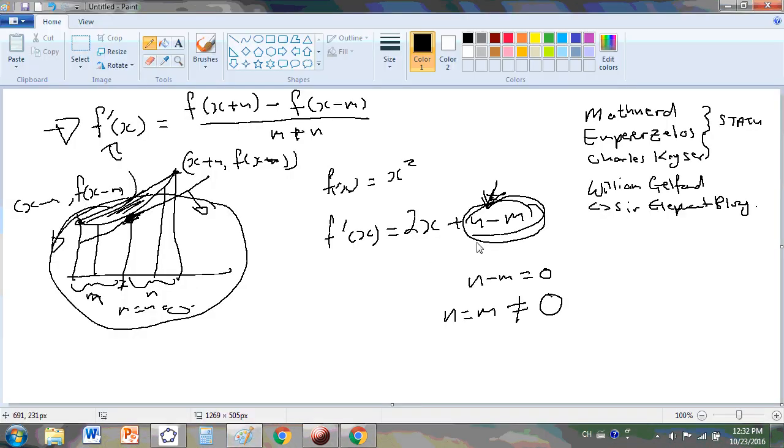So neither n nor m have to be 0. They can be 0 once you've simplified the difference quotient. What is the difference quotient? This. So once you've simplified this, m and n can be 0. They don't have to though. Because all that has to be 0 is the sum of the terms in m and n.